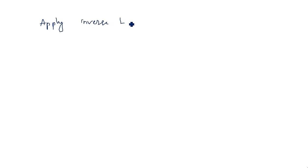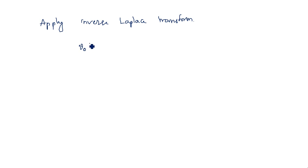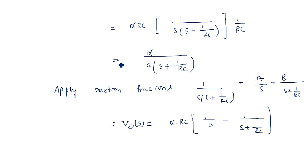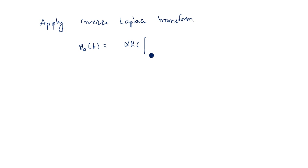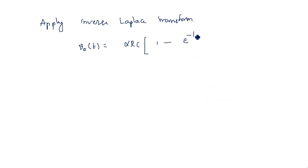Applying the inverse Laplace transform, V_out(t) = αRC · (1 − e^(−t/RC)). This is the output voltage expression when a ramp input is applied to the high-pass RC circuit.